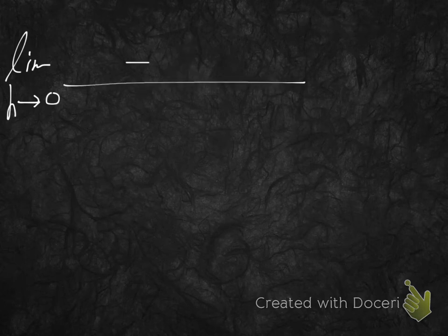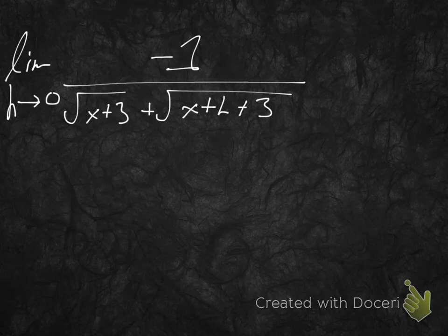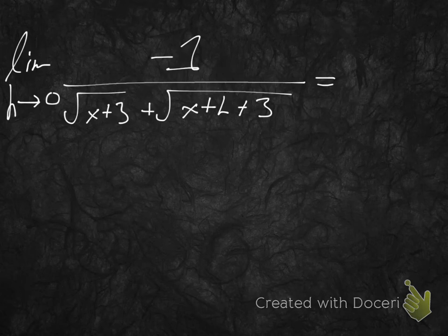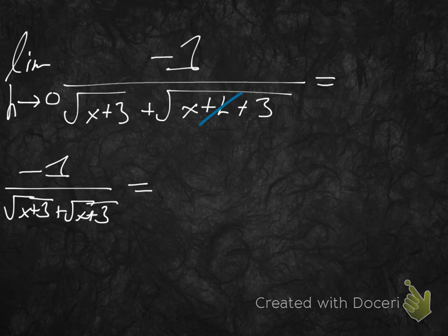That gives us the limit as h approaches 0 of negative 1 over radical x plus 3 plus radical x plus h plus 3. Now we can actually take the limit. As h approaches 0, the h disappears, and we get negative 1 over radical x plus 3 plus radical x plus 3, which is negative 1 over 2 radical x plus 3.